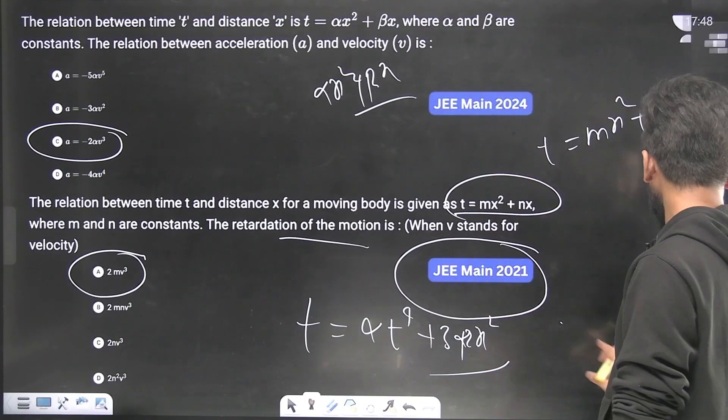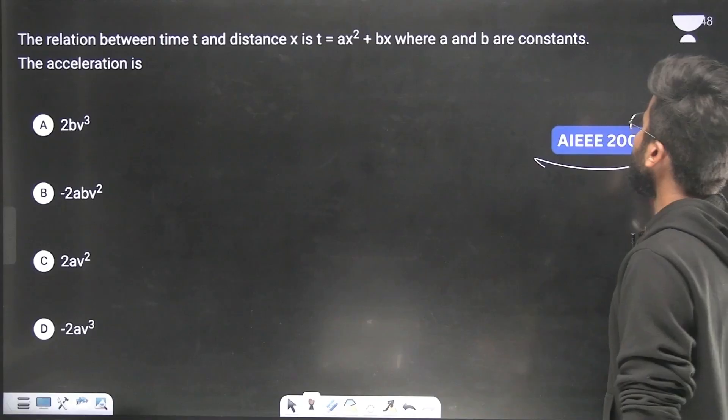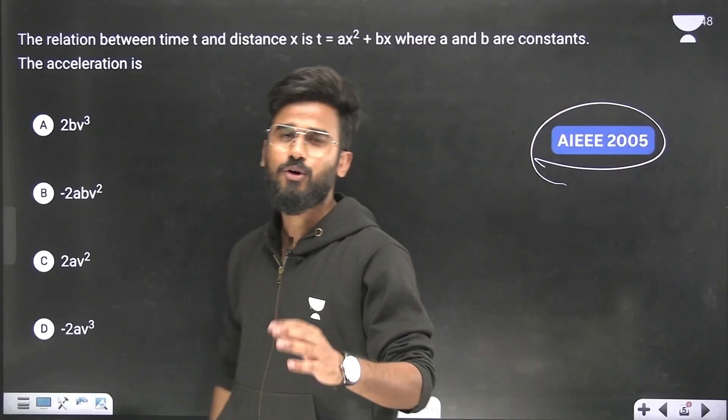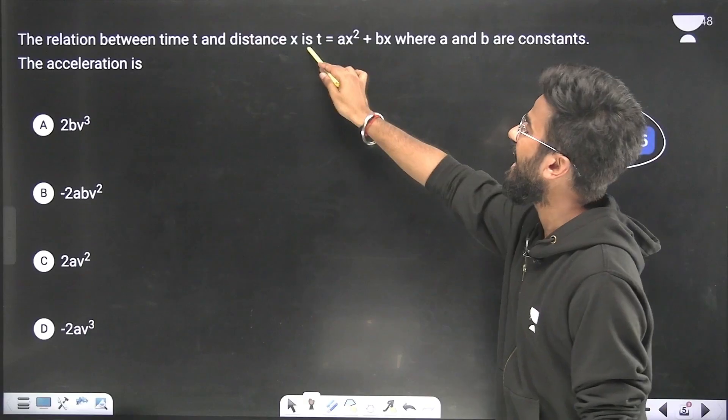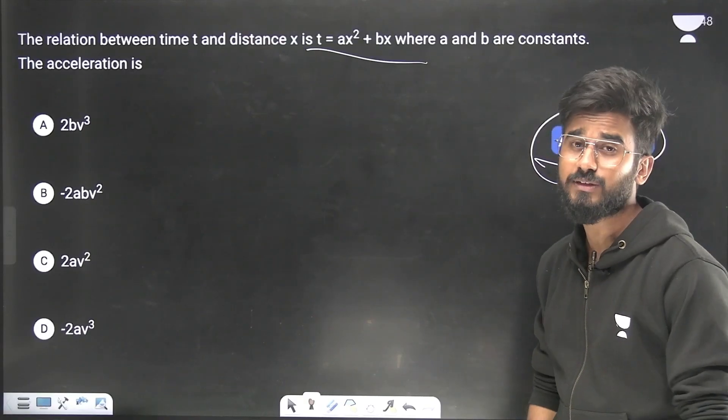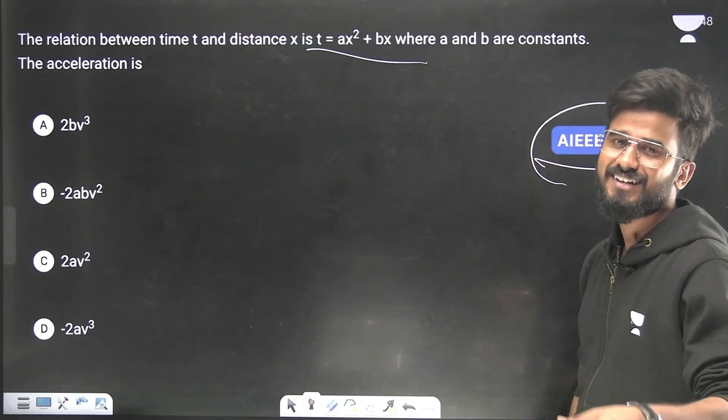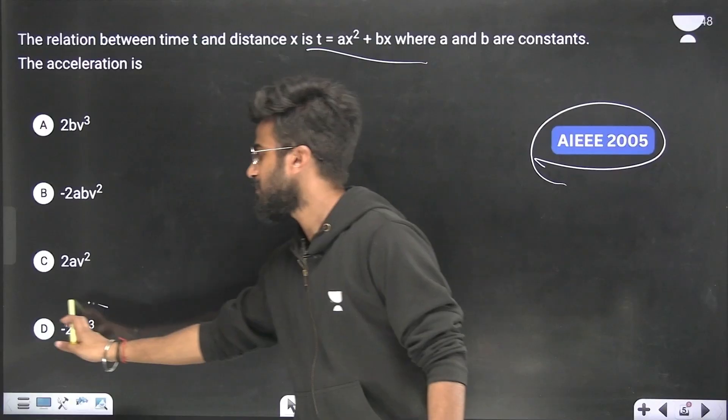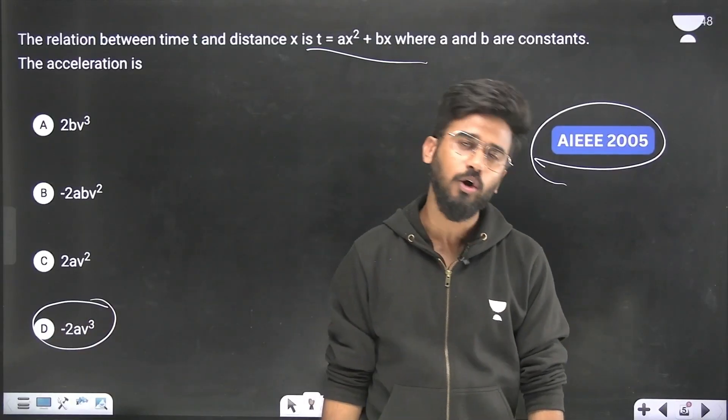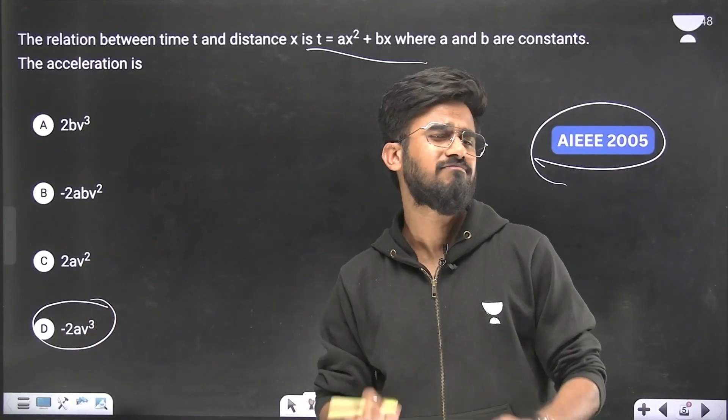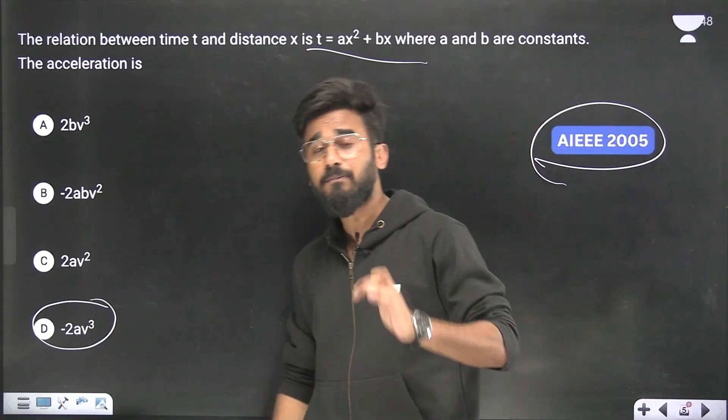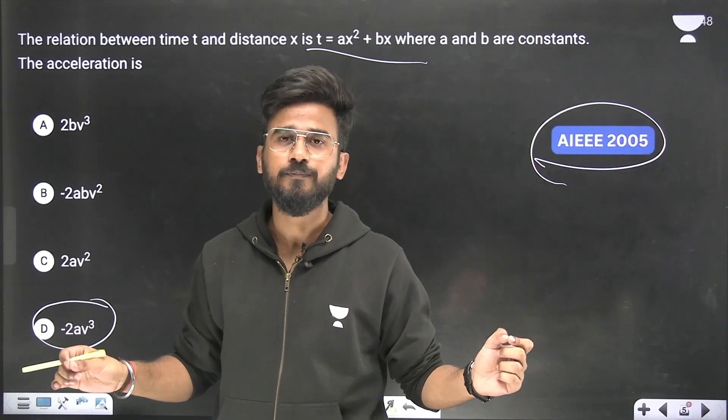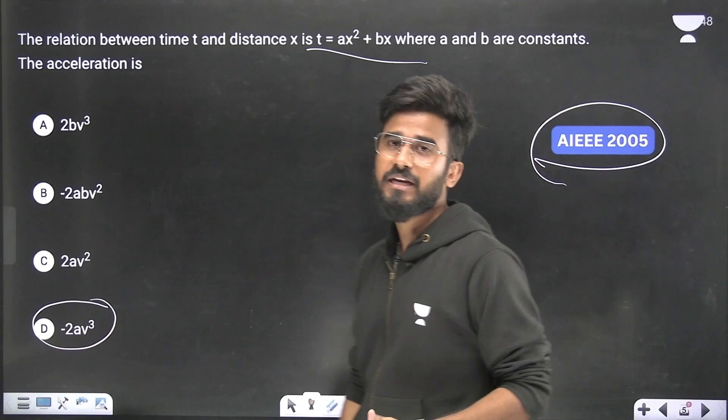That there was a question in AIEEE 2005, and it was identical. It simply says the relation between time t and the distance x, that is t equals alpha x squared plus beta x. The answer is also the same, minus 2a v cubed. So what I am going to tell you, that PYQs are being repeated. But the problem is, there are some PYQs that are exactly repeated, so you can take the benefit of it.